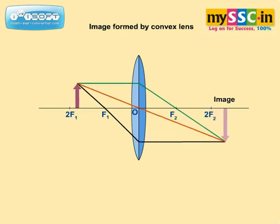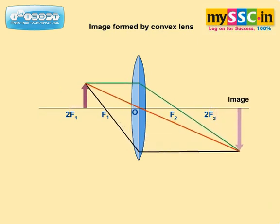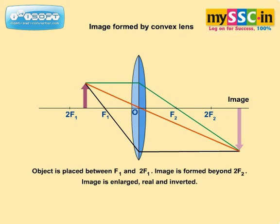When the object is placed between F1 and 2F1, the image is formed beyond 2F2. The image is enlarged, real, and inverted.